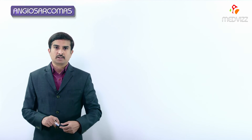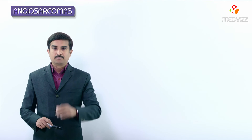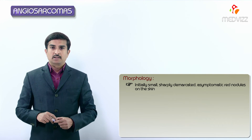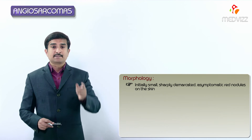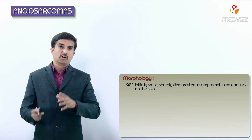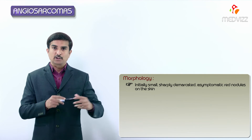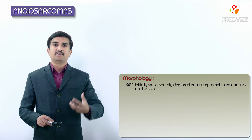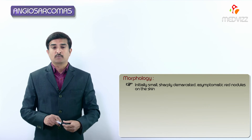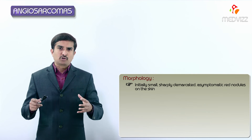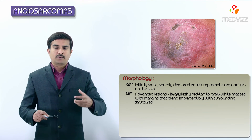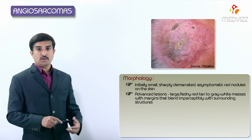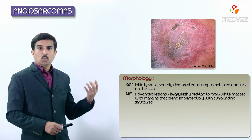Regarding morphology, in the skin these angiosarcomas begin as small and sharply demarcated lesions, often presenting as asymptomatic red nodules. They mimic ecchymosis and look like cellulitis, so patients often neglect them, which can predispose to the development of a more severe aggressive form. Advanced lesions are large, fleshy, red-tan to gray-white masses in color, with margins that blend with the surrounding structures.